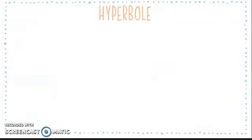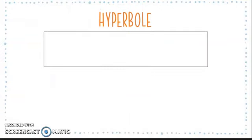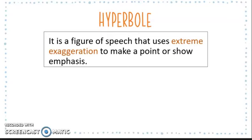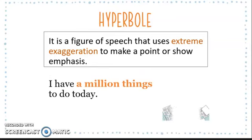And lastly, we have hyperboles. Hyperboles are not comparisons like similes and metaphors, but are extravagant and even ridiculous overstatements not meant to be taken literally. A hyperbole is a figure of speech that uses extreme exaggeration to make a point or show emphasis. For example: 'I have a million things to do.' It is impossible to do a million things in a day, so this statement is exaggerated and shouldn't be taken literally — it simply emphasizes that the person is very busy.